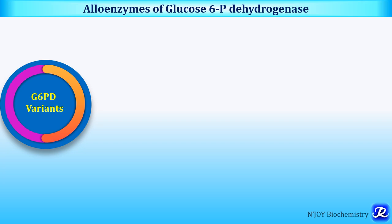Over 400 allelic variants of glucose-6-phosphate dehydrogenase have been identified and all of them are produced by the same locus on the X chromosome.